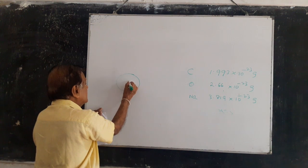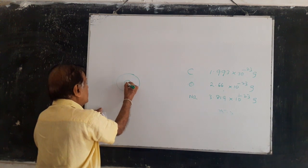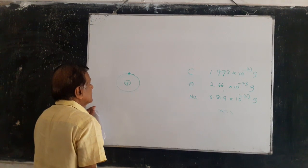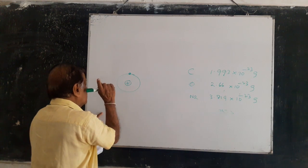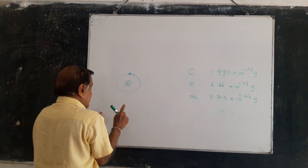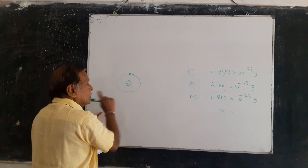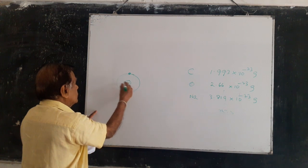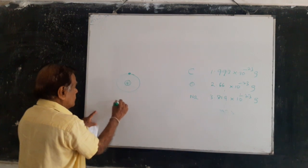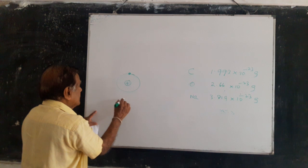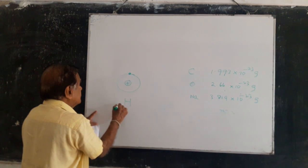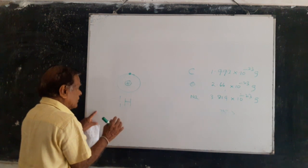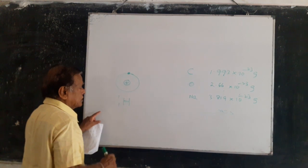In all the hydrogen atoms, you have one proton and one electron. In most of the hydrogen atoms, you don't have neutrons. This is actually ¹H₁ — protium. Most of the atoms of hydrogen are of this type — this isotope.